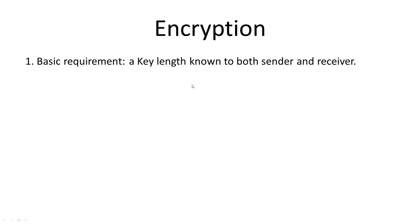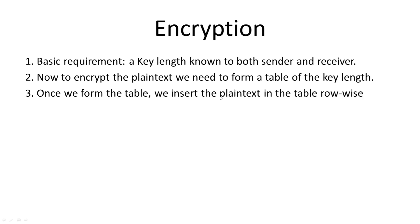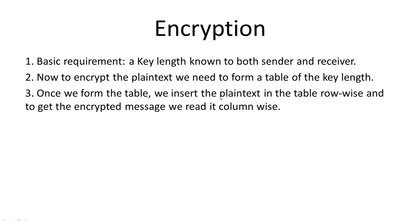For encryption, the basic requirement is that the length of the key should be known to both the sender and the receiver. To encrypt the plaintext, you have to make a table of the key length — there will be that many number of columns as the key length. Once we form the table, we insert the plaintext row-wise, and then we get the encrypted message by reading column-wise.